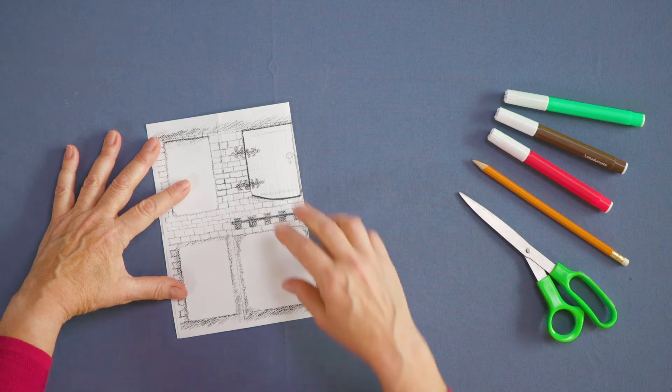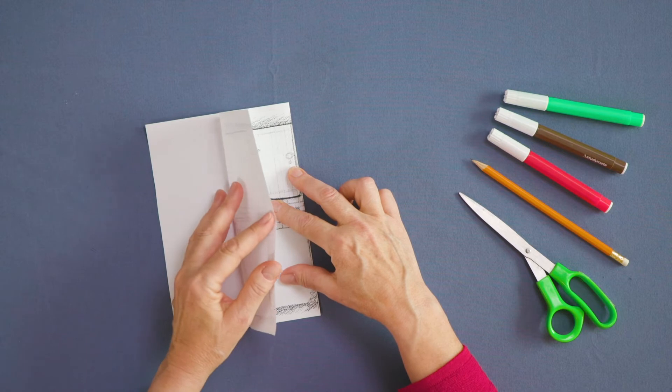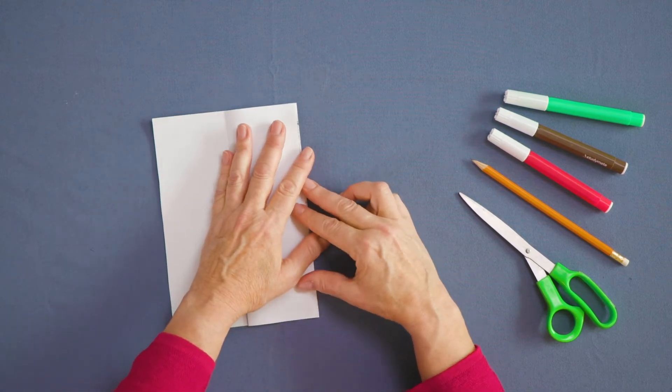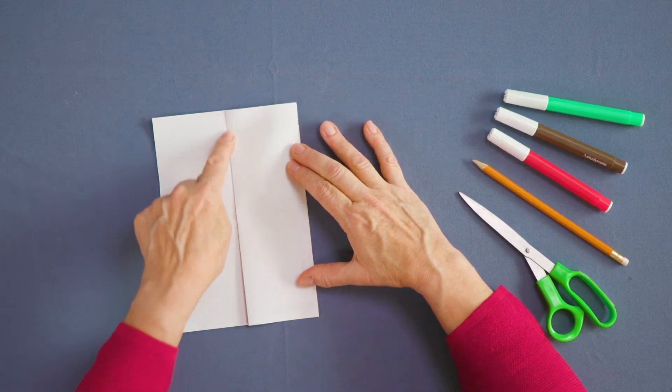Fold the top of the template in half towards the fold. Match the corners. As before, crease the fold by running a fingernail up and down to each end, pressing hard.